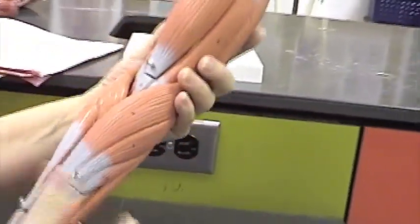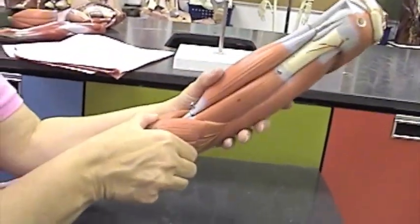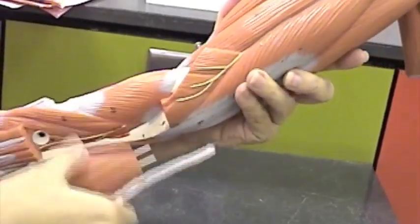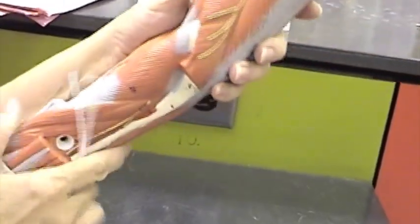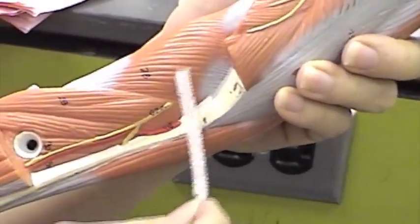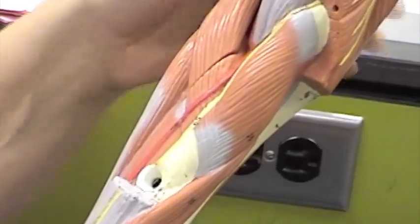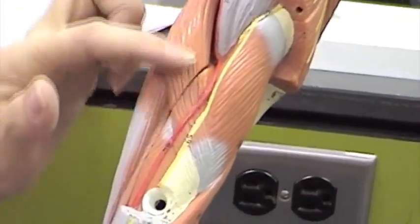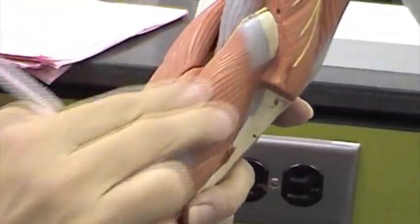Next we'll go to the supinator. In order to find the supinator, I'm going to remove this and this. Deep to superficial muscles, we find the supinator right here. The supinator is an antagonistic muscle to the pronator teres. Here is the pronator. Here is the supinator.